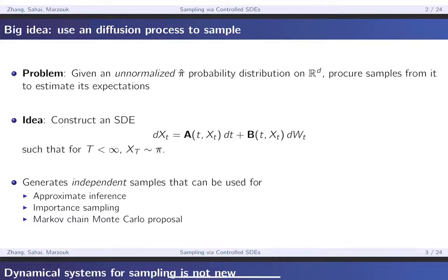The idea is to construct some sort of an SDE such that for some finite time T, if you independently simulate trajectories of this SDE, the points where those trajectories end up at time T will be distributed according to your target density. This is the ideal situation. Because if you were truly able to do this, it generates independent samples that can be used for exact inference. But even if you got some approximation that's pretty good, you can use it for approximate inference, importance sampling, or as a proposal in Markov chain Monte Carlo.